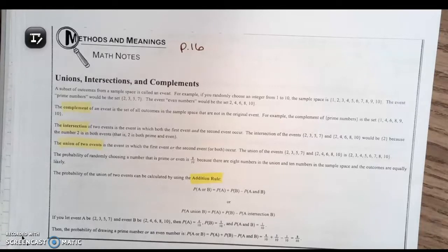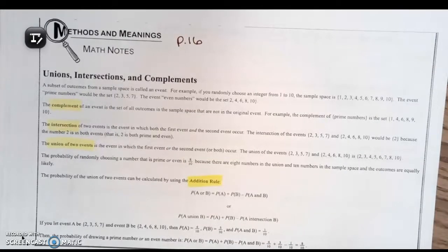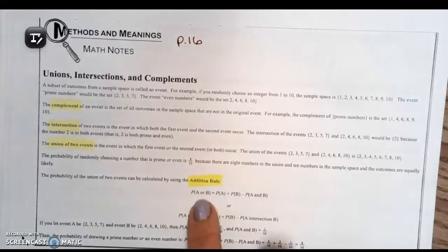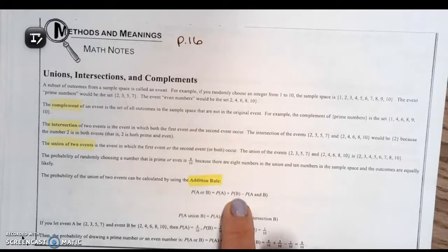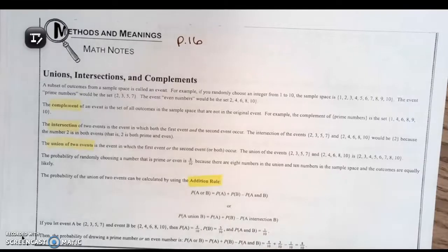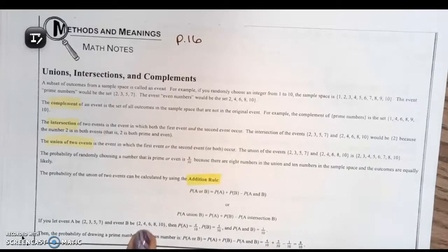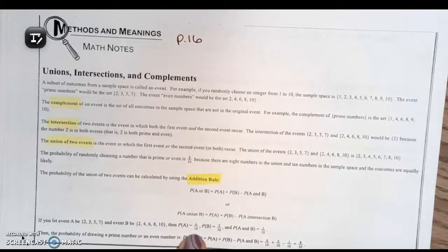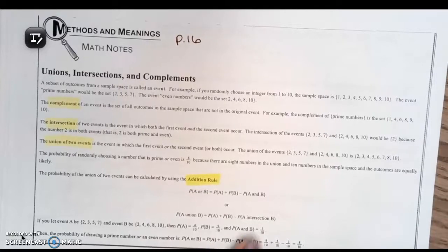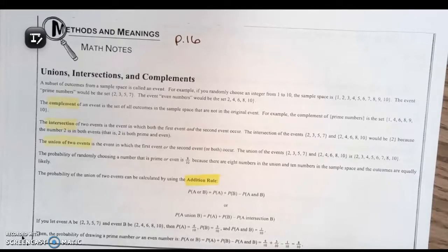The probability of the union of two events can be calculated using the addition rule, which we talked about yesterday. You take the probability of one event plus the probability of the other event and subtract the overlap. If event A is {2, 3, 5, 7} and event B is {2, 4, 6, 8, 10}, then P(A) = 4/10, P(B) = 5/10, and their overlap is 1/10.